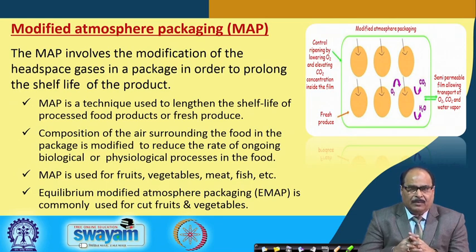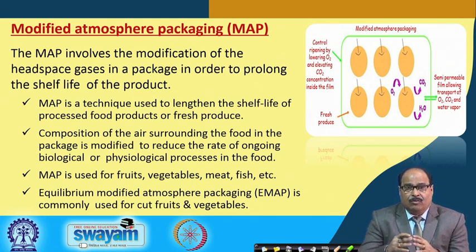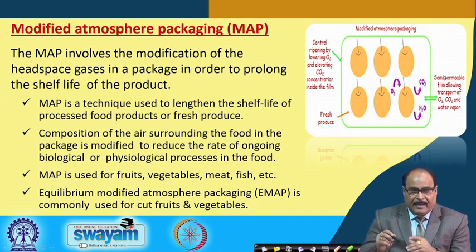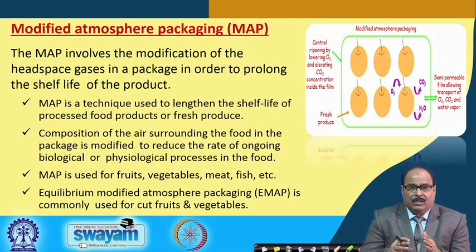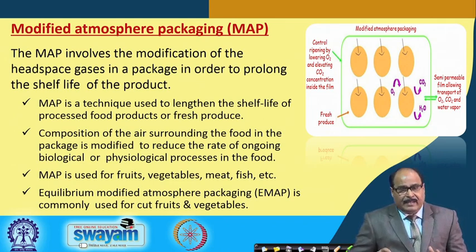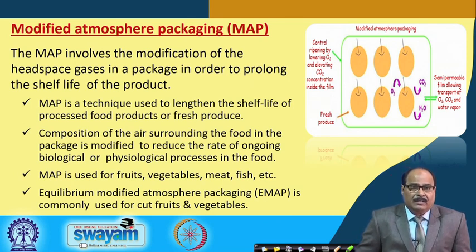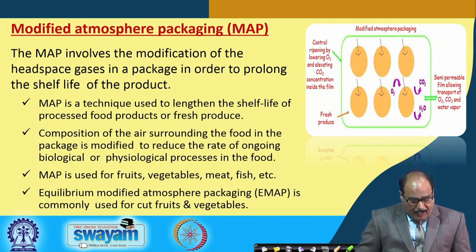The concept of modified atmosphere packaging is the modification of the headspace gases in a package in order to prolong the shelf life of the product. It is a technique used to lengthen the shelf life of processed food products or fresh produce. The composition of the air surrounding the food in the package is modified to reduce the rate of ongoing biological or physiological processes. MAP is commonly used for packaging of fruits, vegetables, meat, fish, and cut fruits and vegetables — this is called equilibrium modified atmosphere packaging.